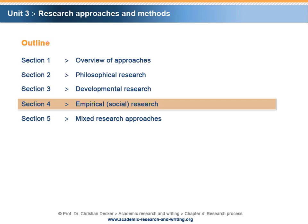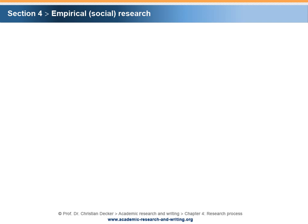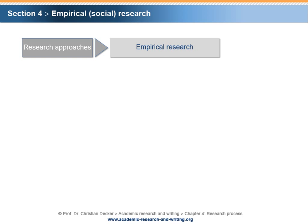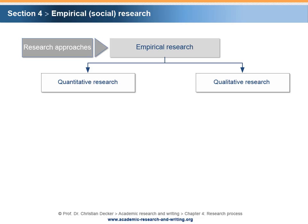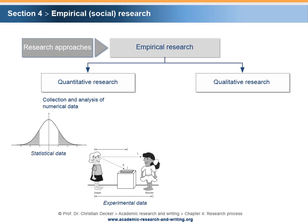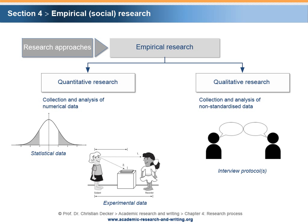Section 4 – Empirical Social Research. The empirical research approach, with its two specifications, quantitative research and qualitative research, can be described as follows. Quantitative research implies the collection and analysis of numerical data, which can include statistical data or experimental data. Qualitative research implies the collection and analysis of non-standardized data that, for example, can be derived from interview protocols.